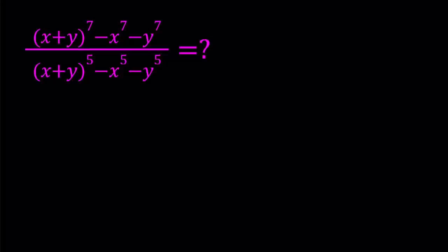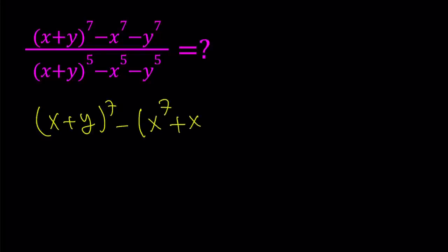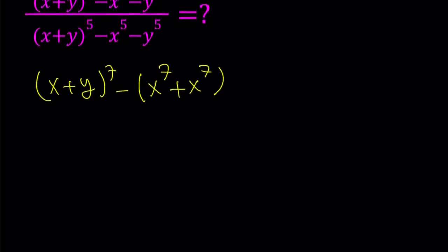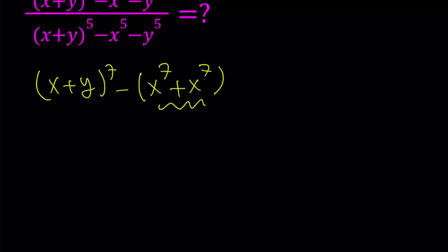I'm going to expand this. So let's go ahead and write this as x plus y to the seventh power, and then take out a negative one and write the second part as a sum. Here's the critical part — I'm going to factor this because when you have a sum of two odd powers, it's factorable.